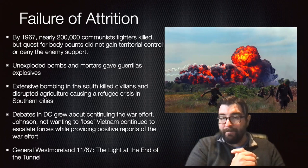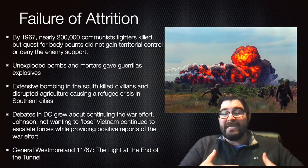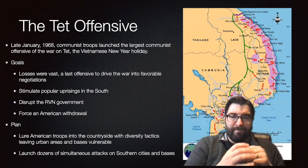In November of 1967, American general in command of Vietnam troops, General William Westmoreland, stated publicly to the media that we are nearing the end — that we can see the light at the end of the tunnel in the Vietnam War. And then the Tet Offensive came.